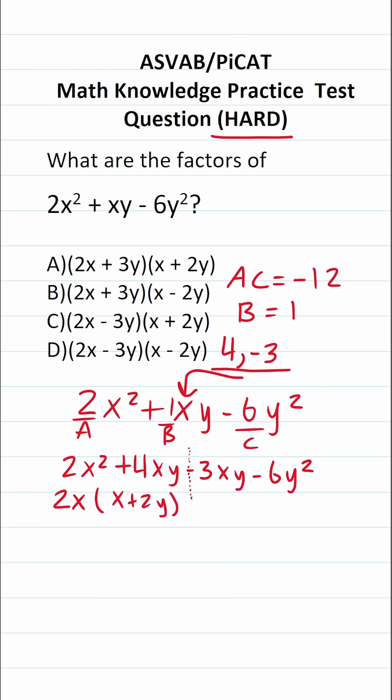Now I'm going to try to factor something from negative 3xy minus 6y squared such that I get x plus 2y in parentheses. So I'm going to factor out a negative 3y. This becomes x plus 2y in parentheses.